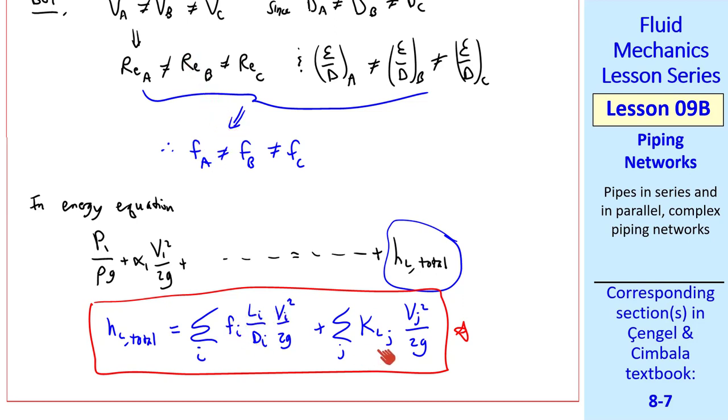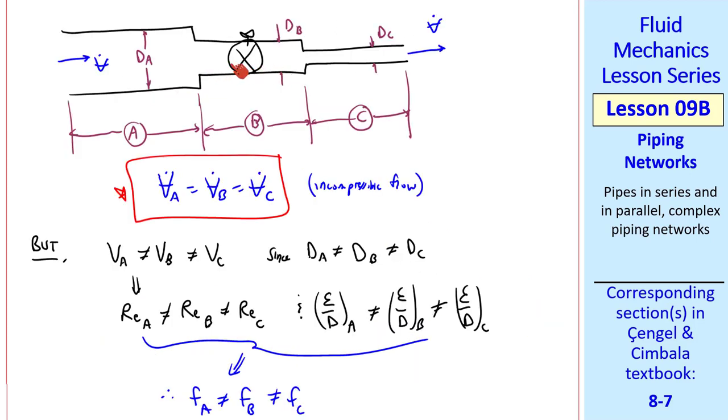Index J is a sum over all the minor losses. Some sections may have none, some sections may have many more than one, and there's a different KL for each minor loss. And you must use the appropriate average speed for each minor loss. In our simple example, the valve is in section B, so the minor loss for this valve would use V sub B, the average speed in this section of pipe. If there were an elbow in this pipe, you would use VC.